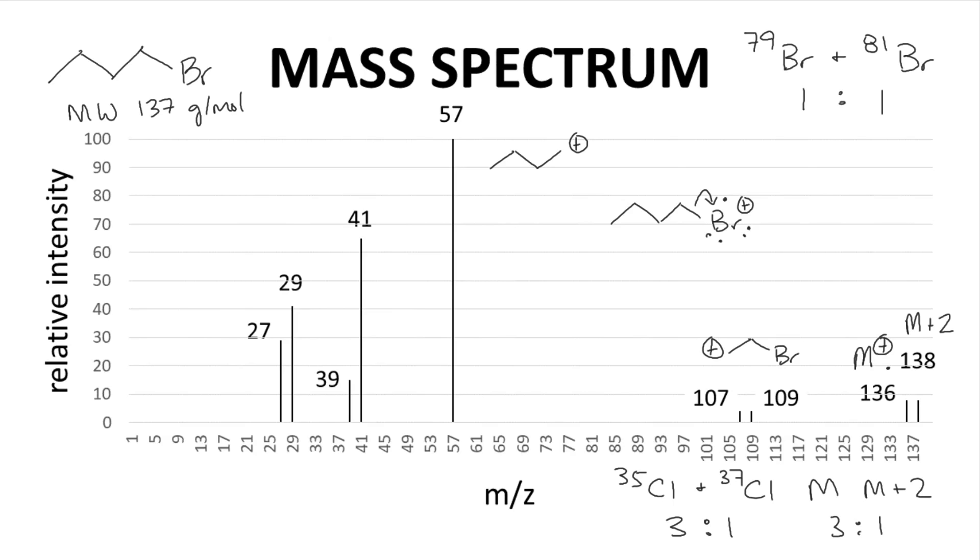If you see an M and M+2 pattern, you very likely have a bromine or chlorine in your molecule.